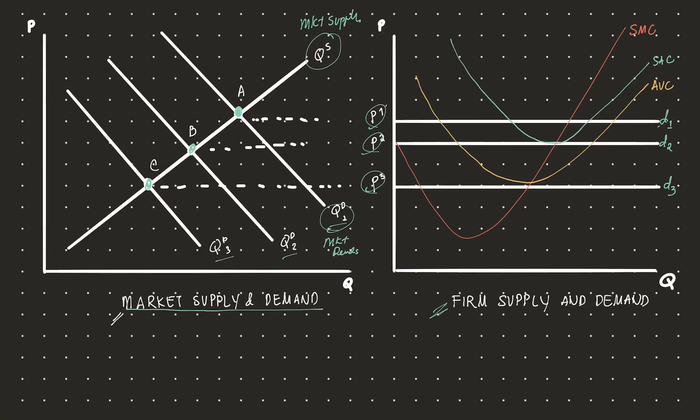When price is set at P1, notice the firm will produce somewhere here based on the conditions, producing Q1. The cost associated with producing that good is only until here, the short-run average cost. So the firm will reap an economic profit equal to that distance there. The firm still has excess profit to spend and do whatever it wants. Excess profits in the market are an incentive for other firms to enter. When more firms enter, price generally goes down because quantity goes up.